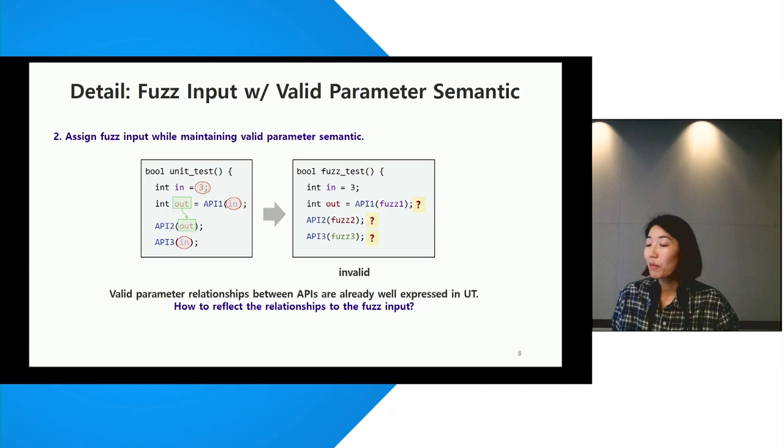Some input parameters should not be directly supplied with fuzzing input, in case there is a relationship between parameters across APIs. In the example, the input to API 2 is an output of API 1, and input to API 1 and API 3 needs to be consistent. If we directly supplied fuzzing input as the arguments, it would be semantically invalid.